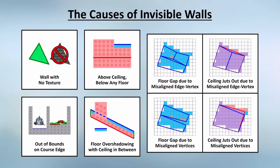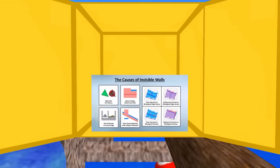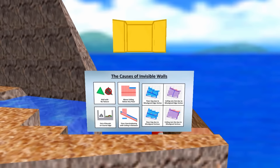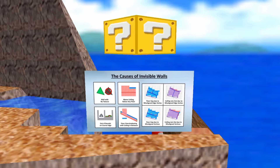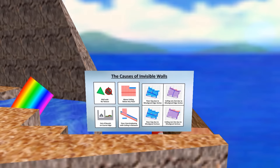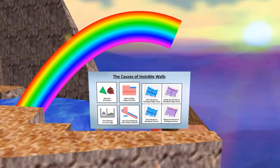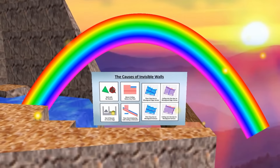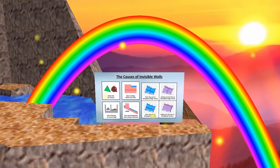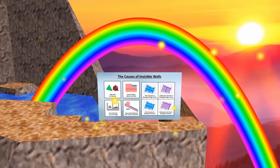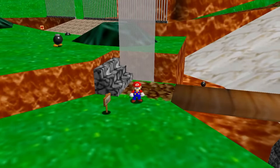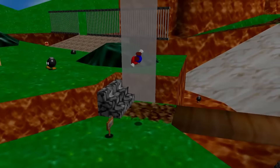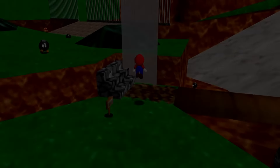And so there you have it — that's all eight causes of invisible walls. Now that it's all explained, there'll be no more mystery or confusion. There's a bright future ahead of us, full of knowledge and understanding, and I'll be there to explain it all. So thanks for watching this video and enjoy the finale.